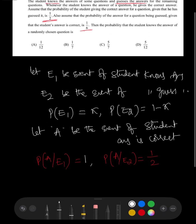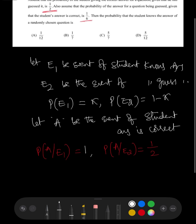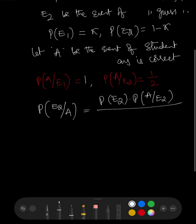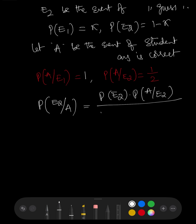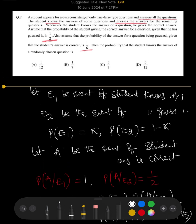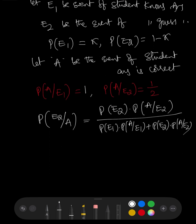We are given P(E2|A) = 1/6. Applying Bayes' theorem: P(E2|A) = [P(E2) × P(A|E2)] / [P(E1) × P(A|E1) + P(E2) × P(A|E2)]. Substituting: 1/6 = [(1−x) × (1/2)] / [x × 1 + (1−x) × (1/2)].